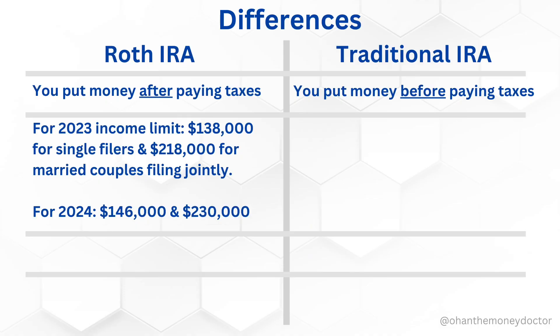The second difference is about annual income limits that determine if you qualify to contribute the full amount to a Roth IRA. For 2023 the limit is $138,000, or $146,000 for 2024, for single tax filers. If you are married and filing jointly, the limits are $218,000 for 2023 or $230,000 for 2024. However, there is a legal workaround called the backdoor Roth IRA — you contribute to a traditional IRA and then convert it to a Roth IRA, because there are no annual income limits for traditional IRA contributions.